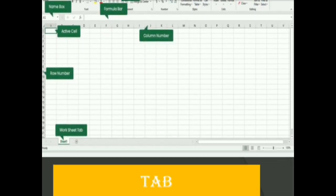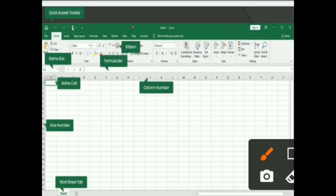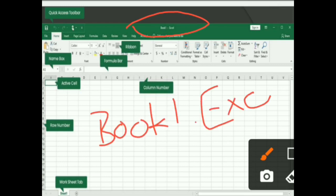Title bar, as we had discussed earlier in MS Office, is present at the top of the screen and it displays name of the file and name of the application. For example, Book1 and Excel. Book1 is the name of the file and Excel is the name of the application. Title bar has three control buttons: Minimize, Maximize, and Close button.